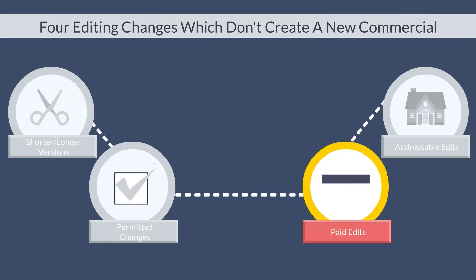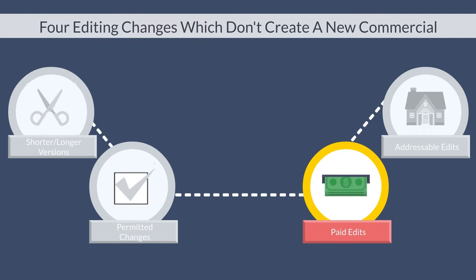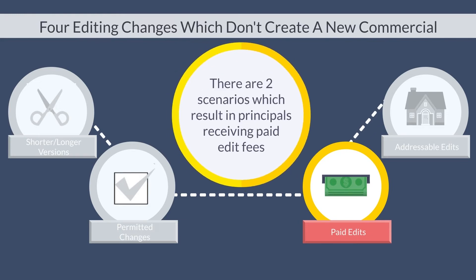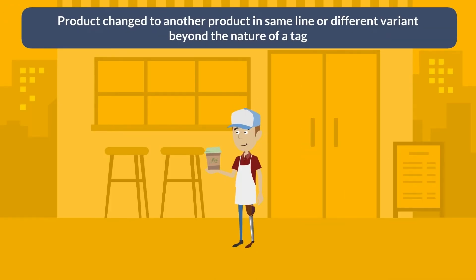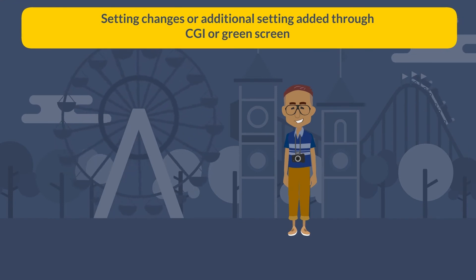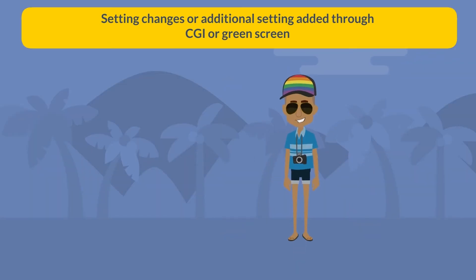Let's jump to the next type of change that does not constitute a new commercial: paid edits. There are two scenarios which result in principals receiving paid edit fees. First, if a product is changed to another product in the same product line or to a different variant of the same product, such as a different color, model, size, scent and flavor, beyond the nature of a tag. Second, if the edit changes the setting or adds an additional setting during the same production via CGI or green screen.